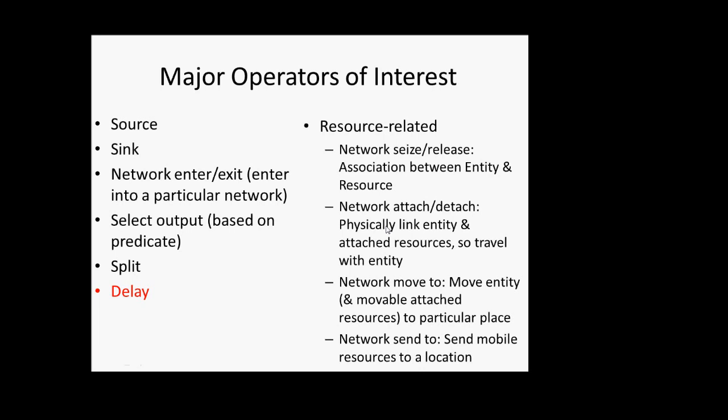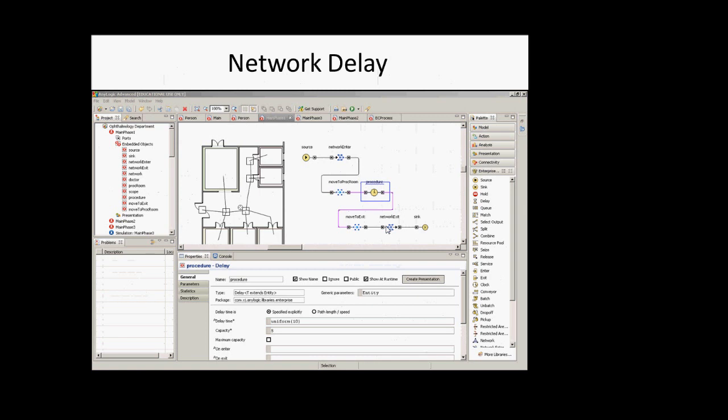An agent will try to obtain a resource — we use the term 'seize a resource.' If they can't, they're in a queue, they're waiting. Resources live in pools of interchangeable resource units. A seized resource comes from the pool; a released resource returns to the pool. Agents will try to seize resources to be able to undergo some procedure. If you have clinicians who differ in some respects, and a patient always gets paired with the same clinician, the way you do that is by representing the different pools.